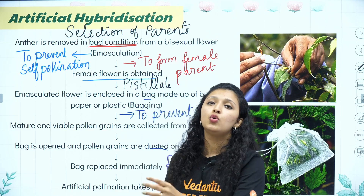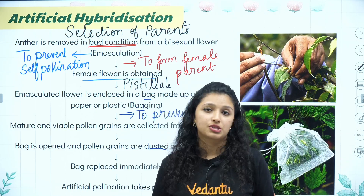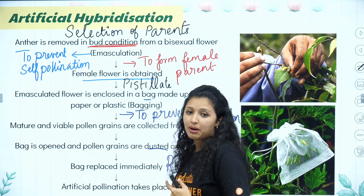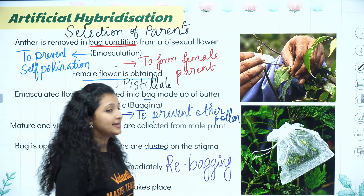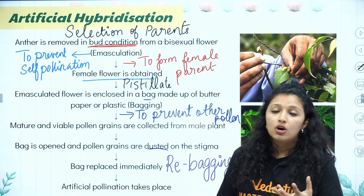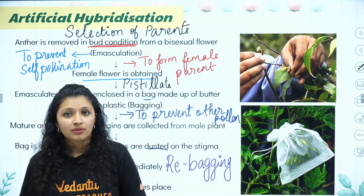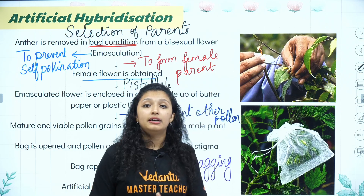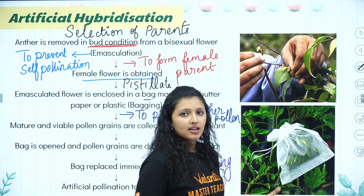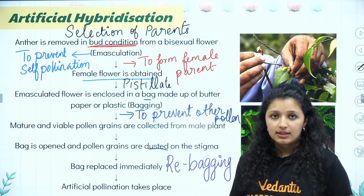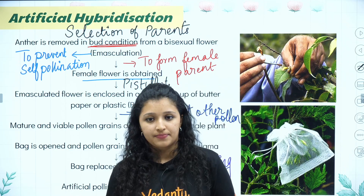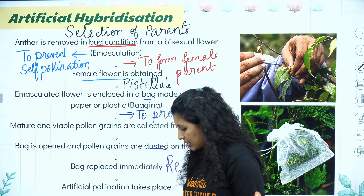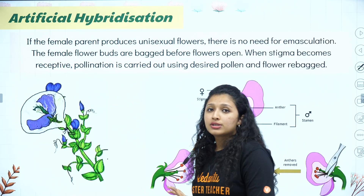After pollinating the female flower with the desired pollen grains, they replace the bag again immediately. This is called rebagging — it is a very important step. We can't take the risk of unwanted pollen contaminating after we have already dusted the desired pollen grains. We allow the pollen-pistil interaction and double fertilization process to occur.